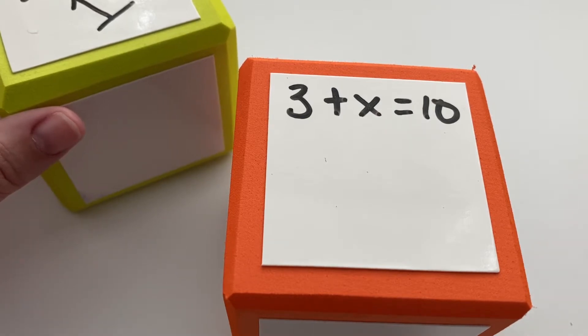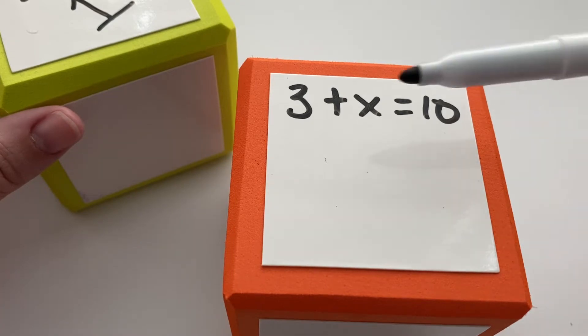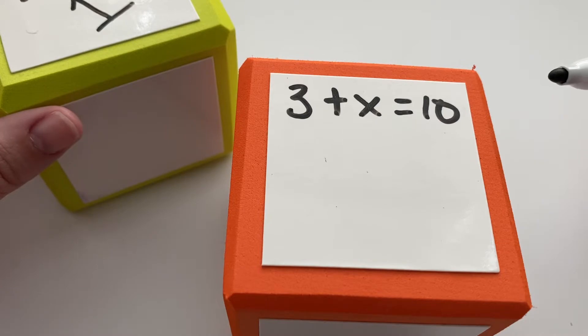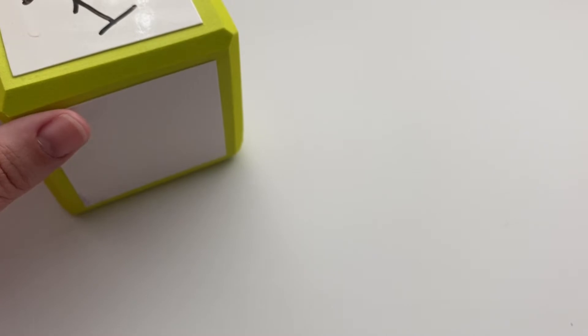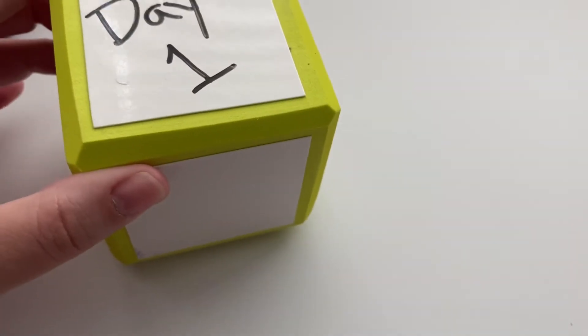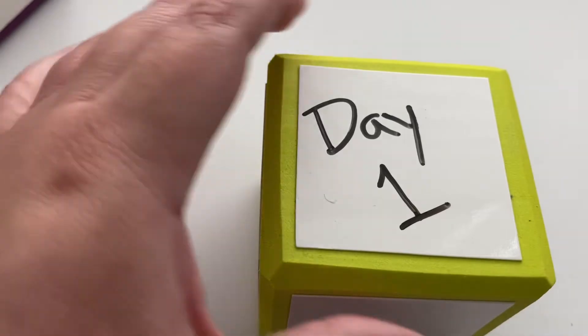So what it literally means is that this 10 is equal to 3 plus something. We just don't know what the something is. So what do we do if we can't figure it out just by looking at it and making good math sense? There are some things that we can do.